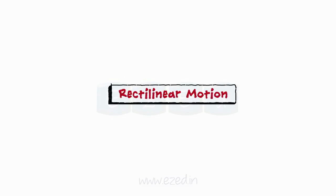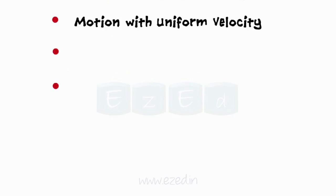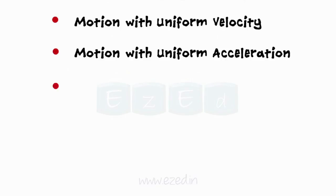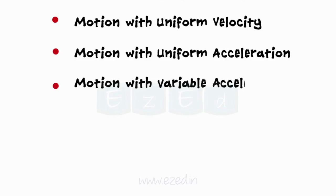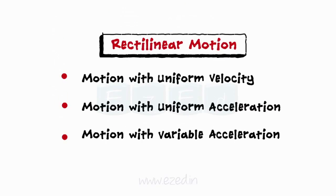Rectilinear motion is further divided into three motions: motion with uniform velocity, motion with uniform acceleration, and motion with variable acceleration.